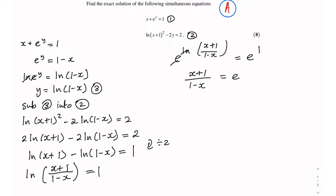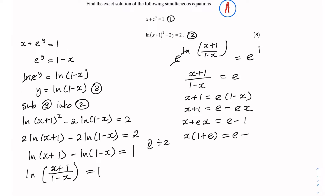I can multiply both sides by (1 − x) to give x + 1 = e(1 − x). Expanding the right hand side gives e minus e·x. Taking the x terms to one side gives x + e·x = e − 1. The left hand side can be factorised: x(1 + e) = e − 1. Making x the subject gives x = (e − 1)/(1 + e). That is the exact solution for x.